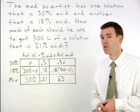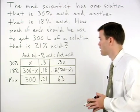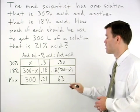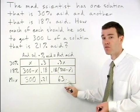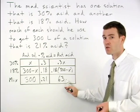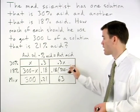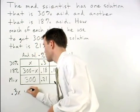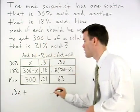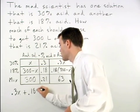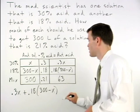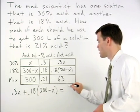For our equation, we use the idea that the amount of acid in each of our solutions will add to the amount of acid in our final mixture. So that's .3x plus .18 times 300 minus x equals 63.